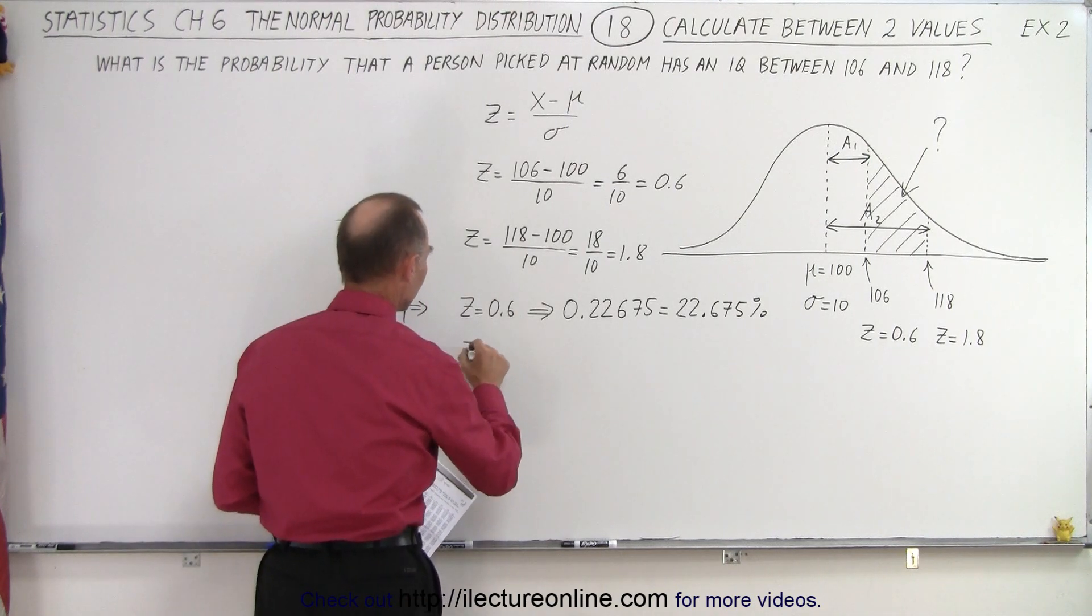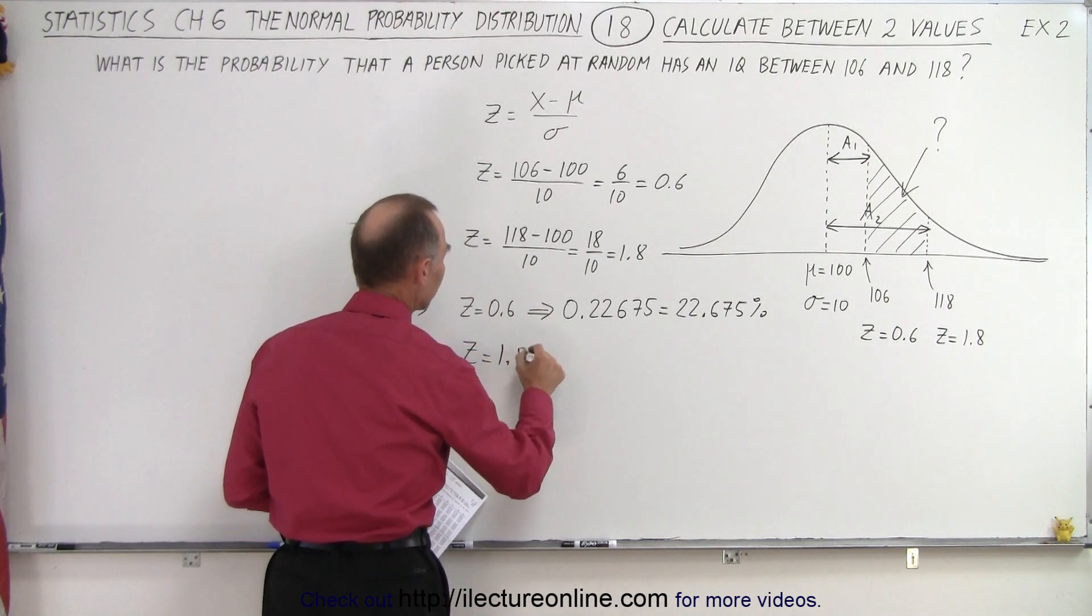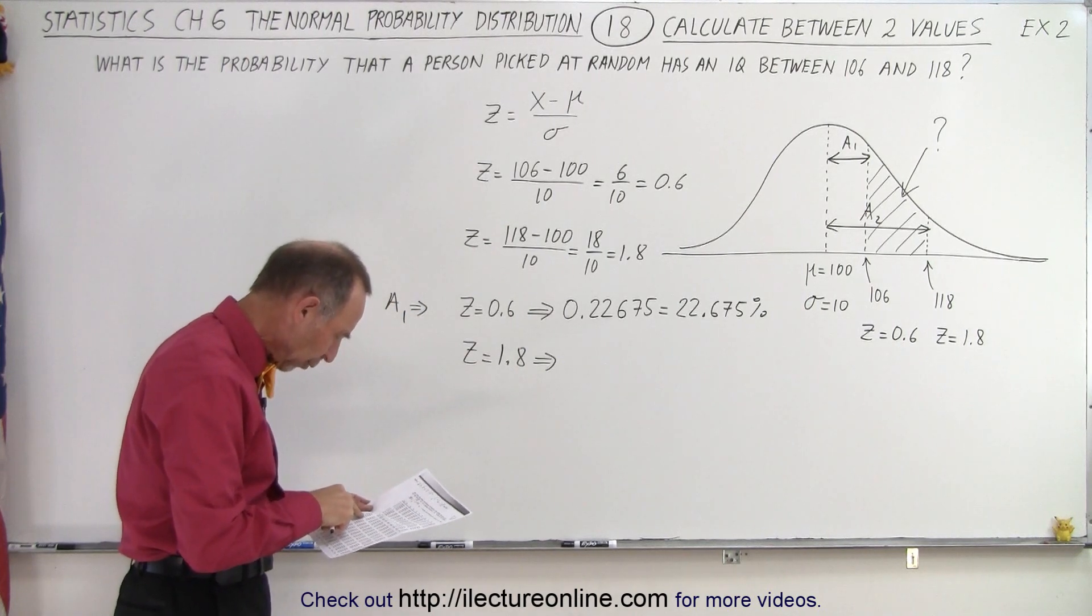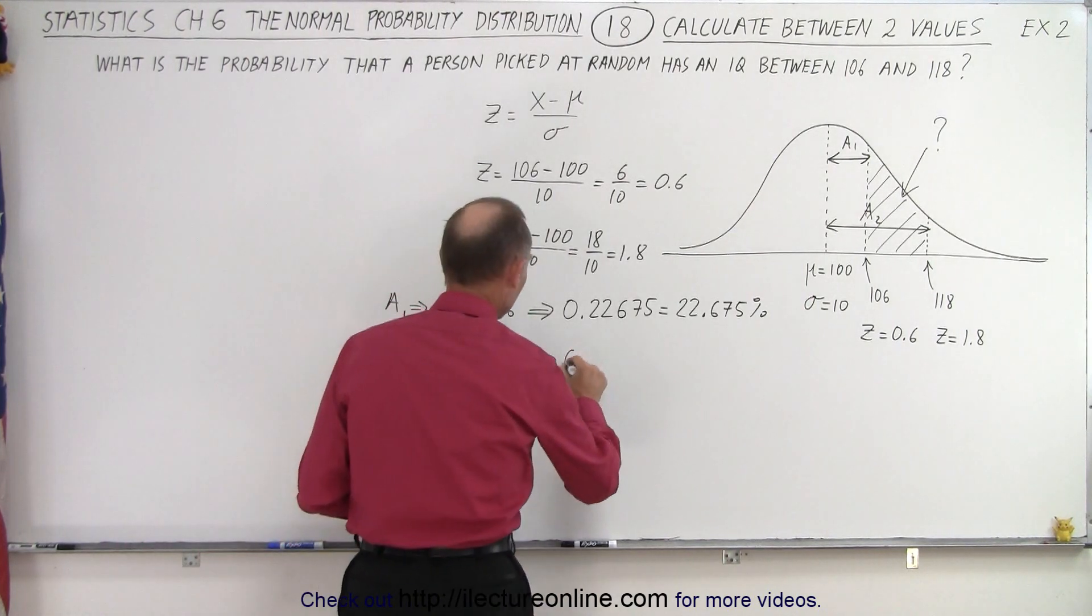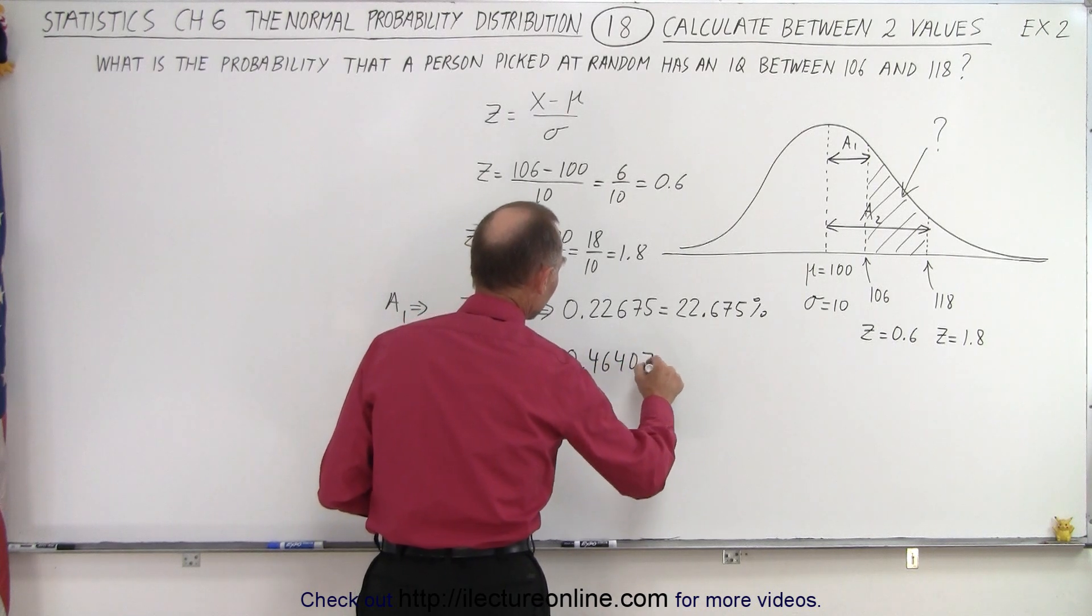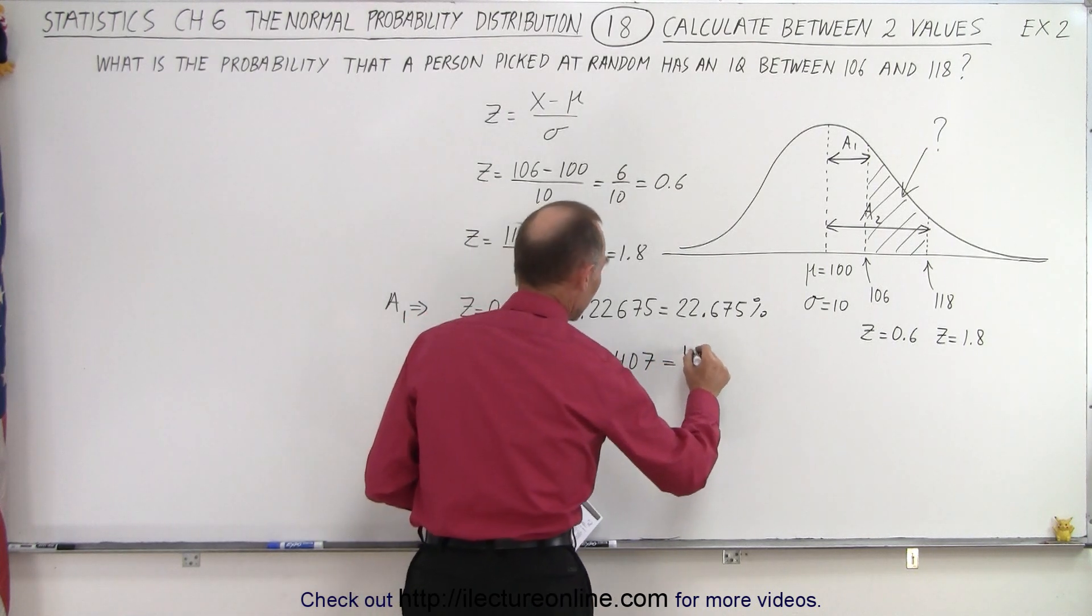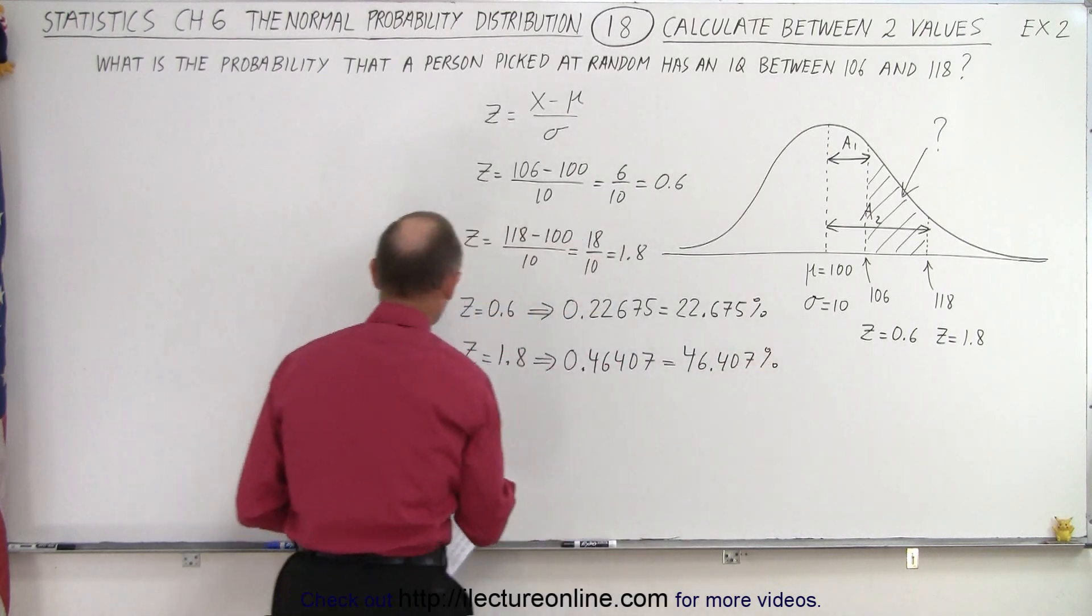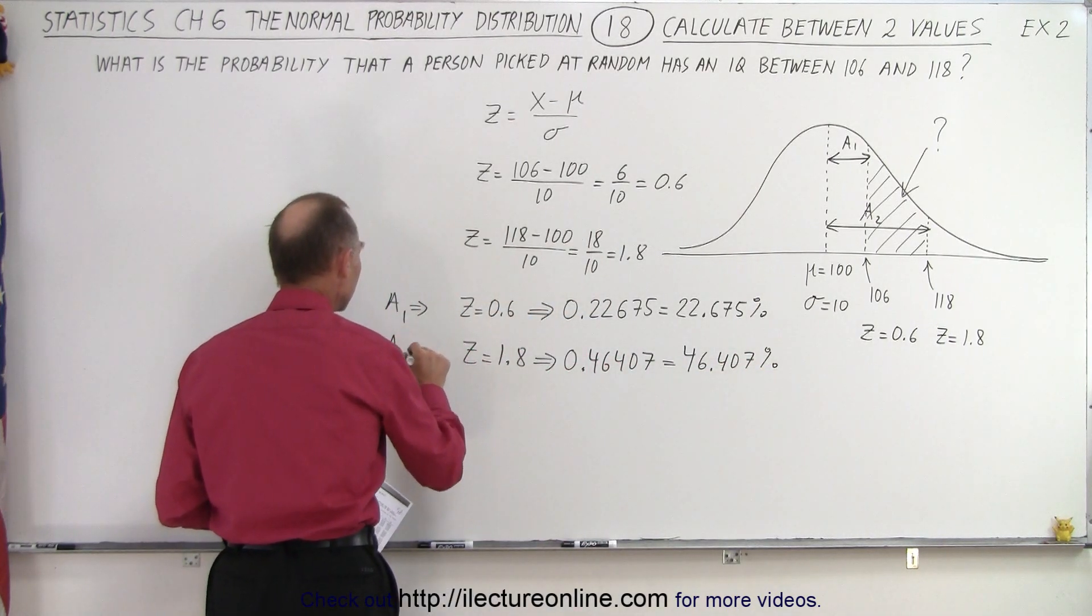And then for z equals 1.8, go to our table. 1.8 is 46407. So 0.46407 which means it's 46.407 percent. And that corresponds to the area A2.